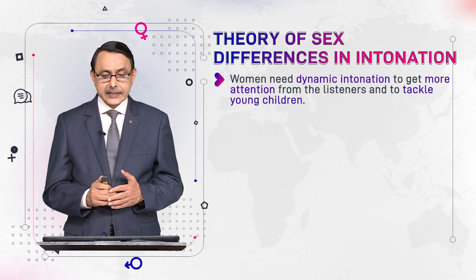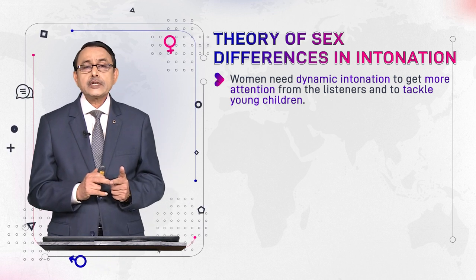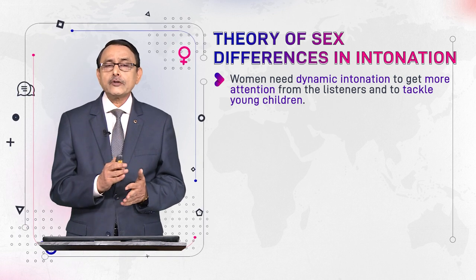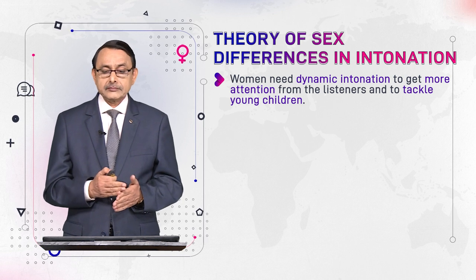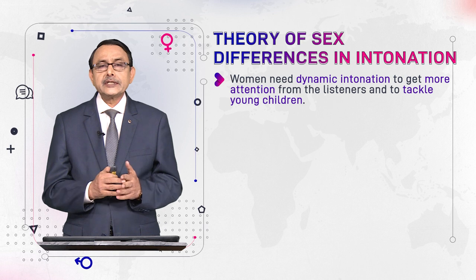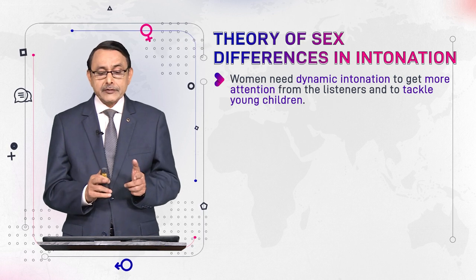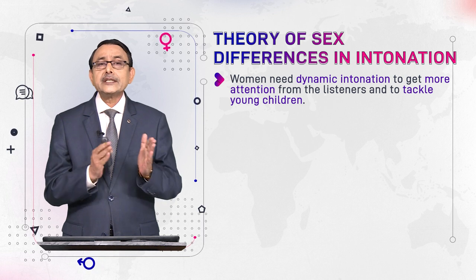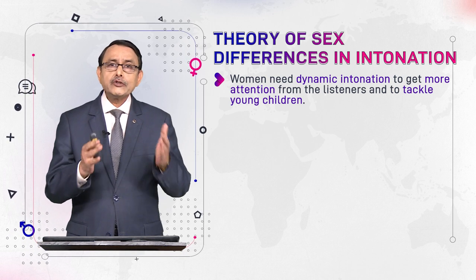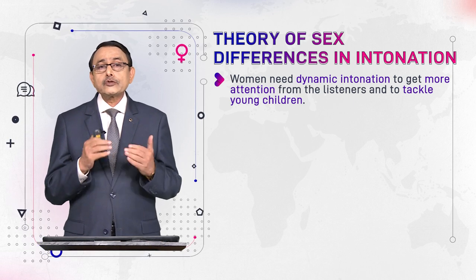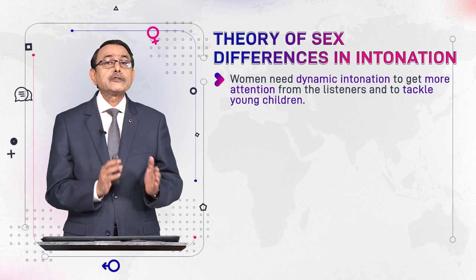The sixth point in this series is: women need dynamic intonation to get more attention. This is actually a rejection of the view hinted at in the previous point — that they need dynamic intonation with loudness because they are emotionally unstable. Here we are told there is another dimension: they use it because they want to get the attention of listeners, and they also need it to tackle children. Such a kind of intonation pattern is required for dealing with children.